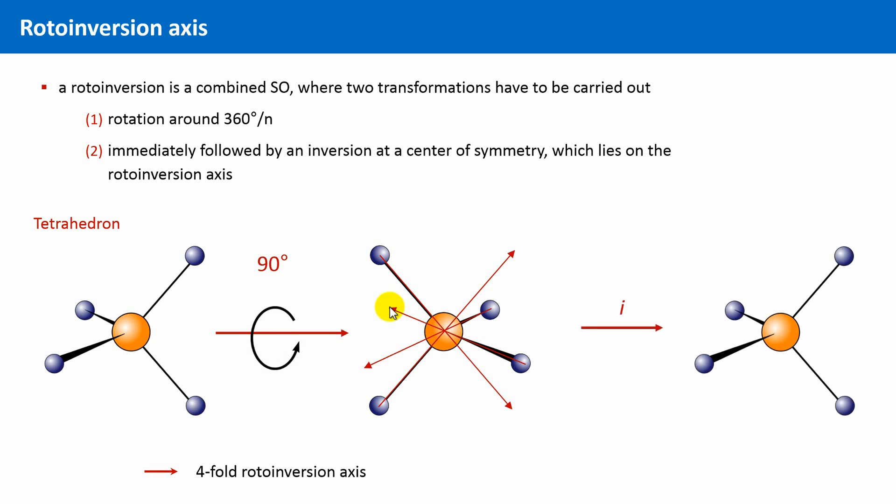The respective symbol for a four-fold rotoinversion is 4 bar, which is the combination of a four-fold rotational axis with a center of inversion. And the graphical symbol is shown here, a rhombus with an incorporated ellipse.